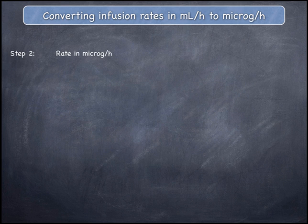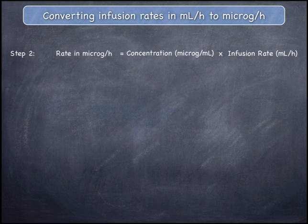In the second and final step, the rate of the infusion in micrograms per hour can be found by multiplying the concentration of the additive in the IV fluid in micrograms per mL by the infusion rate in mL per hour. This gives 0.2 micrograms per mL multiplied by 200mL/h.